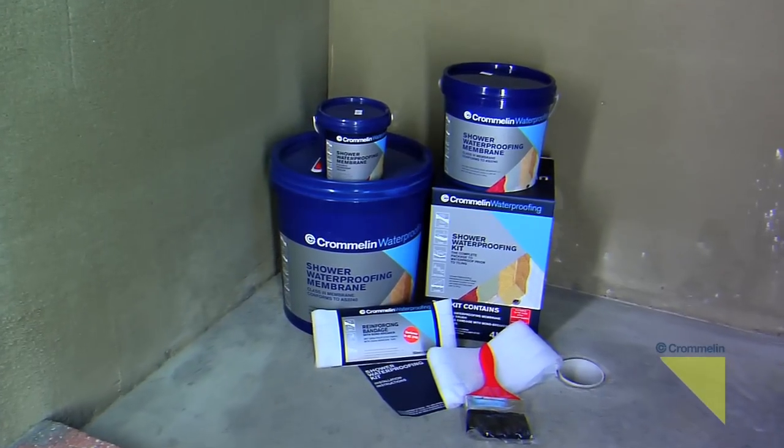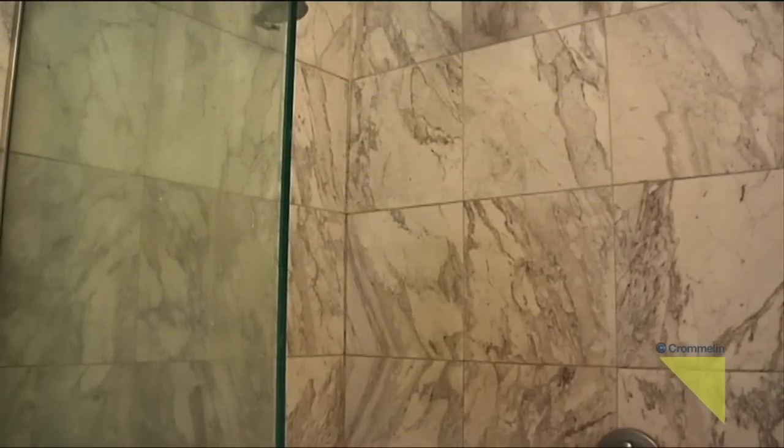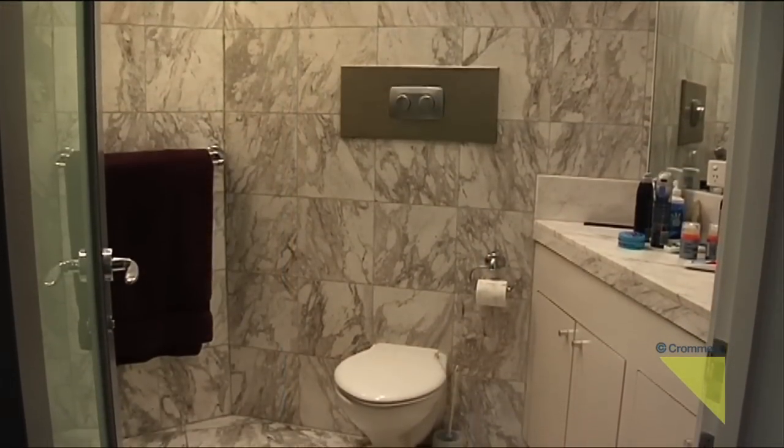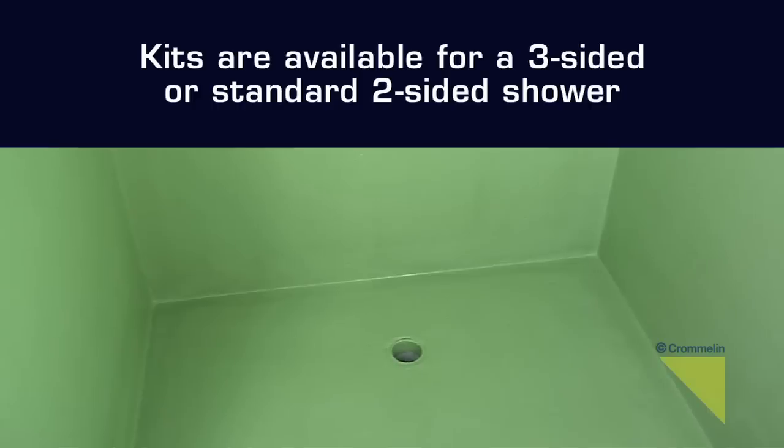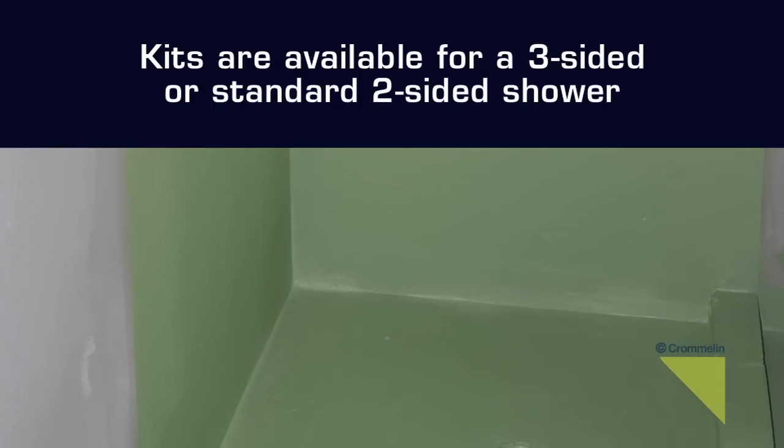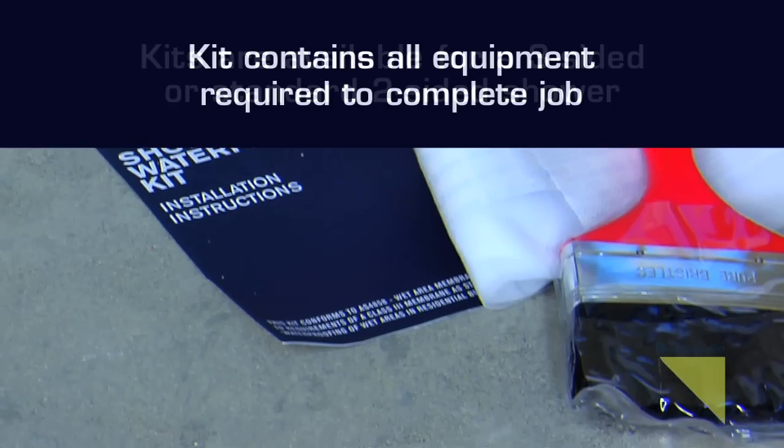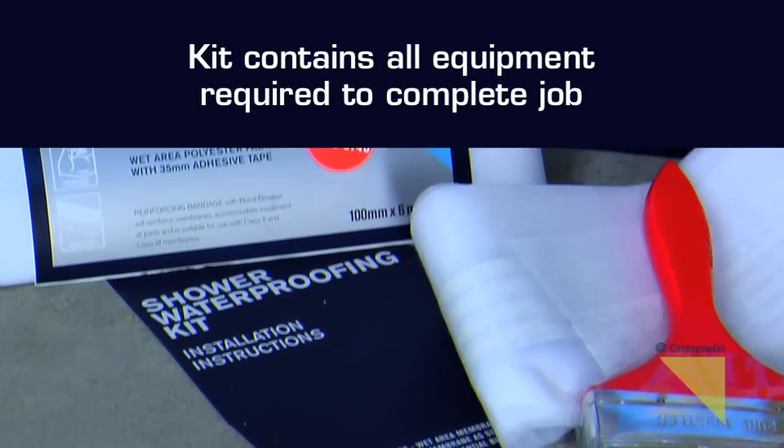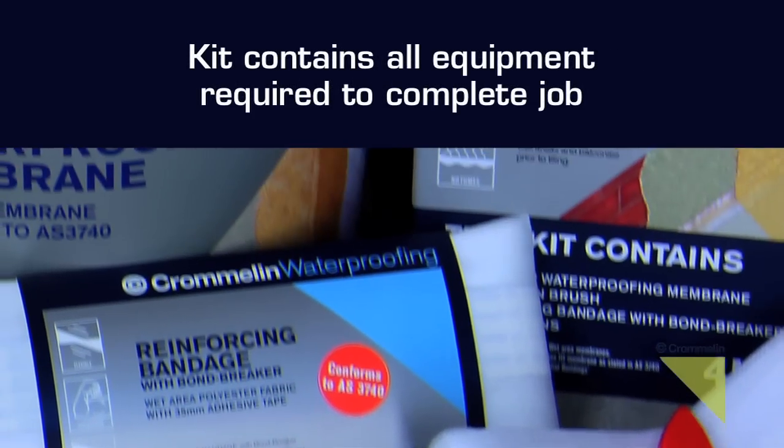Cromlin Shower Waterproofing Membrane and Kits are designed to waterproof your shower and other areas prior to tiling. Our waterproofing kits are conveniently packaged for either three-sided or a standard two-sided shower. Shower waterproofing kits contain all materials to waterproof your shower.